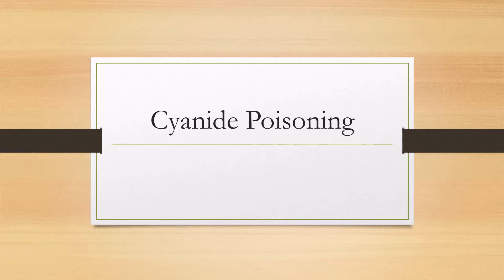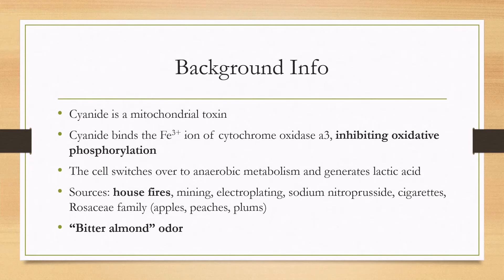Let's talk about cyanide poisoning. Cyanide is a mitochondrial toxin that binds the iron Fe3+ ion of cytochrome oxidase A3, which inhibits oxidative phosphorylation. This causes the cell to switch over into anaerobic metabolism, which generates lactic acid.